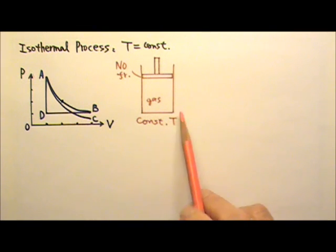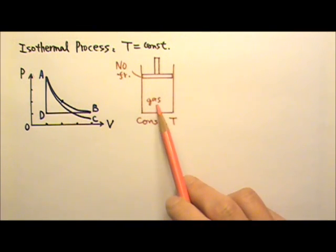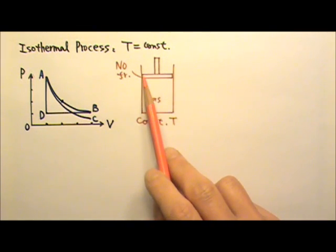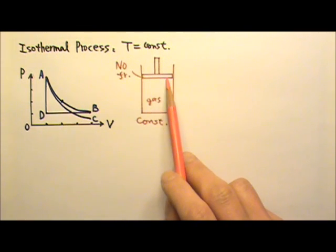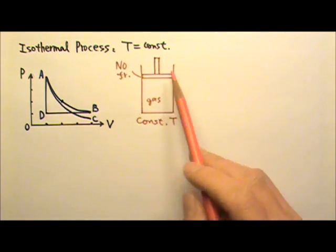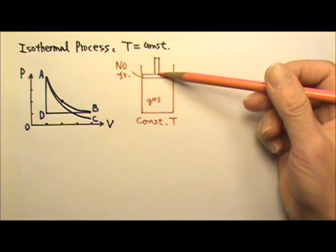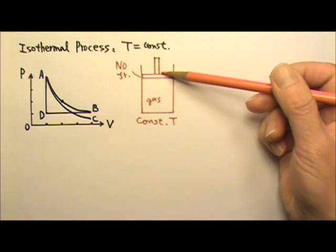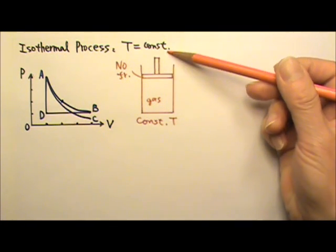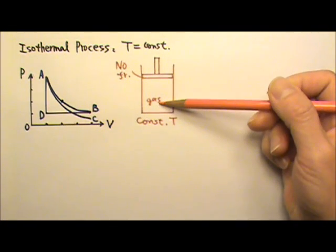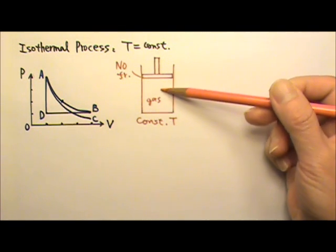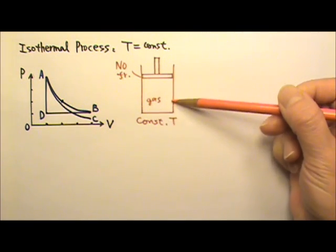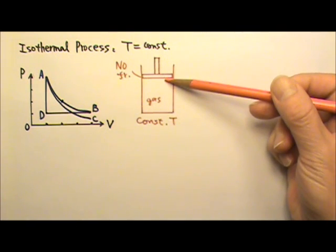We're going to start with a gas-filled cylinder with a frictionless piston. This piston has a handle on it, so we can move the piston up or down in order to keep the temperature of the gas inside constant.